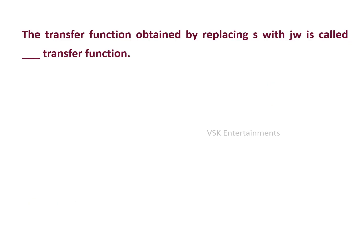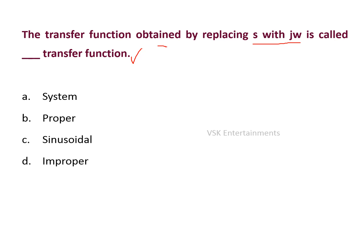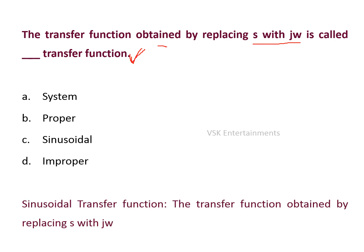Next question: the transfer function obtained by replacing s with jω is called dash transfer function. Options are: system transfer function, proper transfer function, sinusoidal transfer function, and improper transfer function. In the Bode plot, the transfer function obtained by replacing s with jω is called the sinusoidal transfer function. So option C is the right answer.